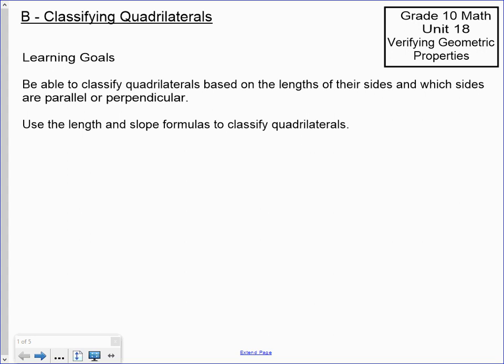This lesson is on classifying quadrilaterals. Similar to what we did in the last lesson on classifying triangles, when we're given some information about a quadrilateral — basically a quadrilateral defined by four vertices — we want to classify it based on the lengths of its sides, its angles, and which sides are parallel and perpendicular to each other. We'll do all of this using the length and slope formulas.